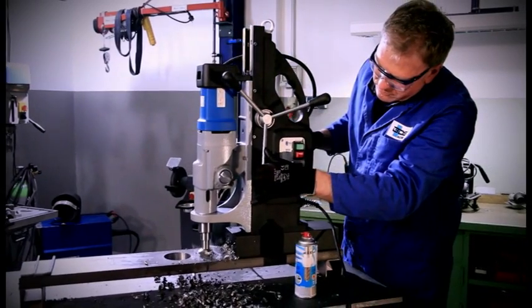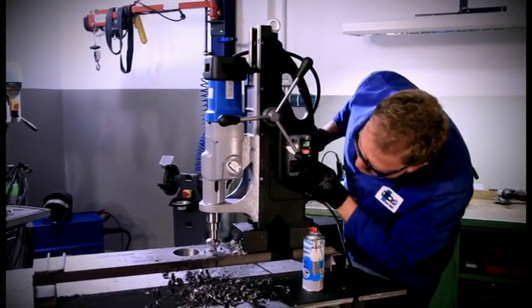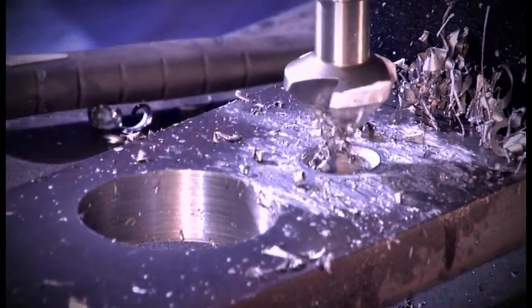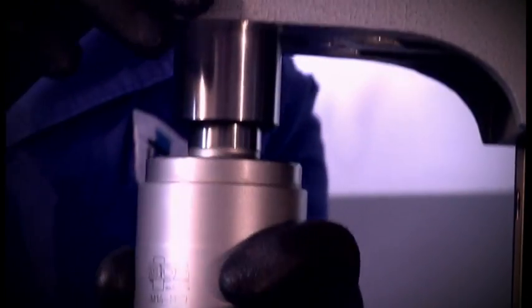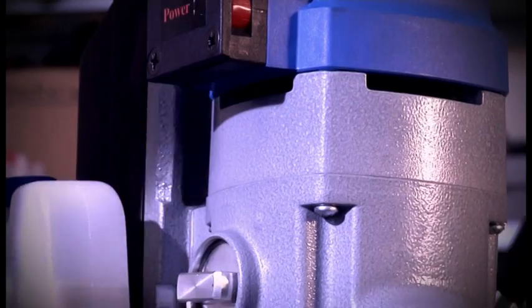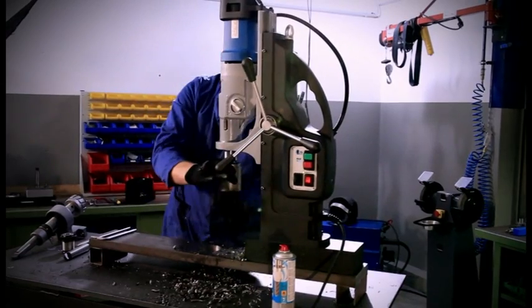For tapping, BDS offers various holder systems. Here you see a basic holder with MK 4 taper, used with a quick change insert for making through hole threads. The handling of the machine is the same in case of other tool holders.